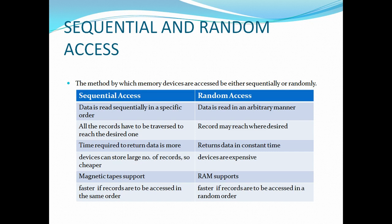Random access devices are more expensive than sequential access devices. Magnetic tape supports sequential access. Random access memory supports random access to records. Sequential access is fast and efficient if records are to be accessed in the same order. Random access is fast if records are to be accessed in a random order.